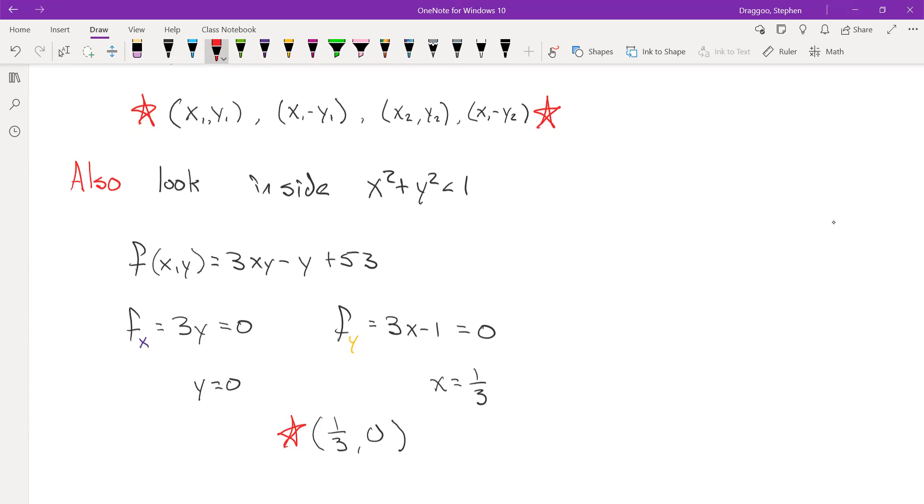So we will need to check all of these solutions and this solution to see which one to find our maximum and minimum. Nice part about that is though, just the biggest number is the maximum, smallest number is the minimum. So I'm going to conclude the video here. And if you want to see the actual numbers that I ended up getting, I'll include those in the written version of the notes. So cool. I hope you like Lagrange multipliers. Okay, bye.